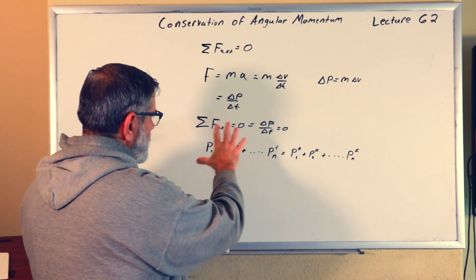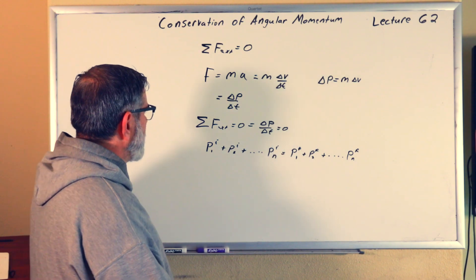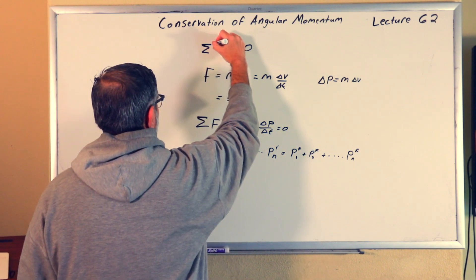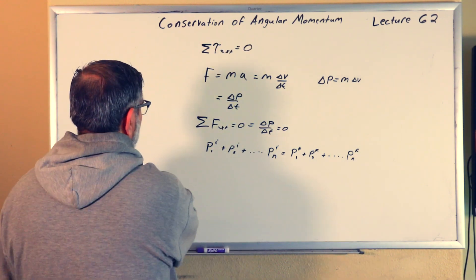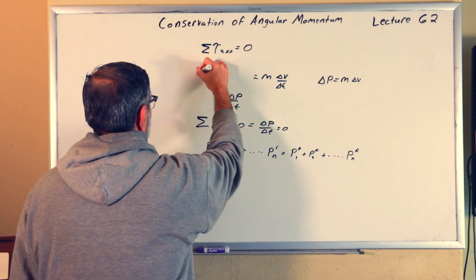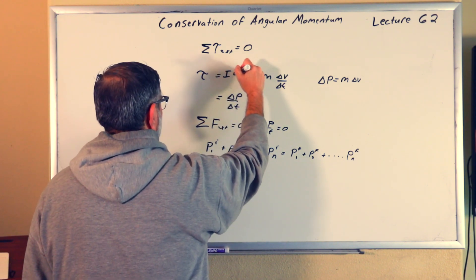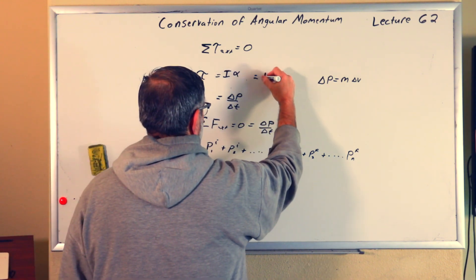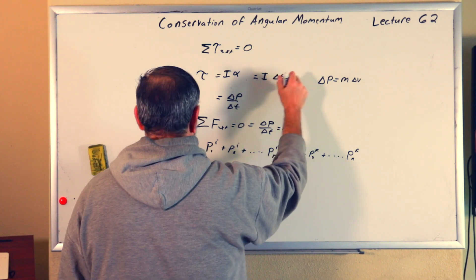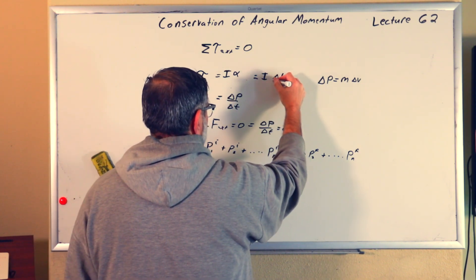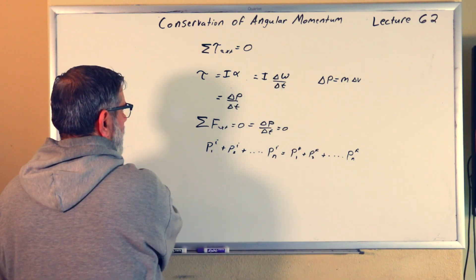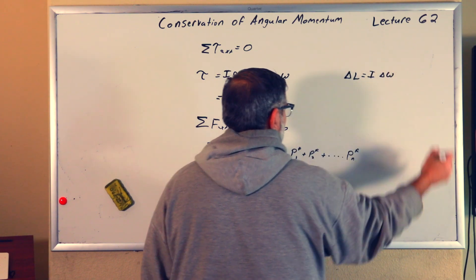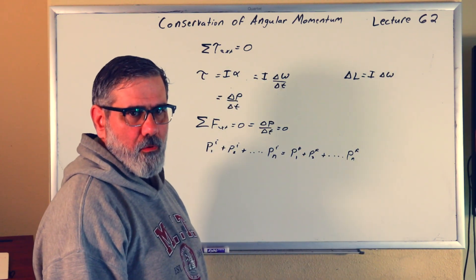We can do something very similar with torques. All I have to do is replace the condition with: the sum of the external torques equals zero. Then replace force with torque equals I times alpha, where I is the moment of inertia, which I can write as I times delta omega over delta T. So the change in angular momentum equals I times the change in the rotational velocity — totally analogous to what we did for linear momentum.